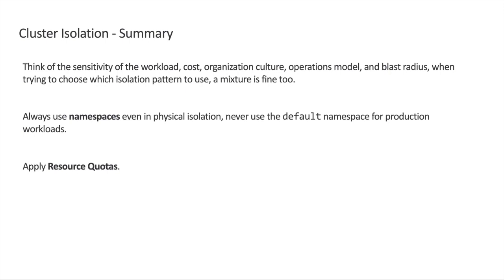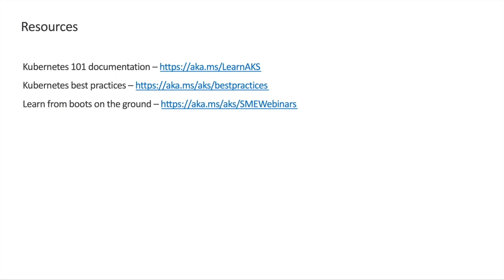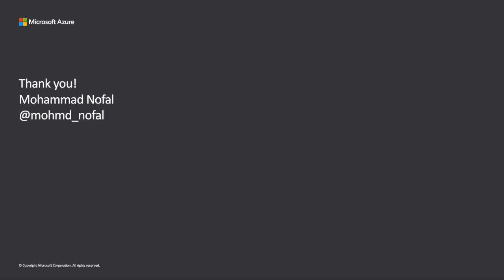Never use the default namespace for anything close to production. And resource quotas must be applied even in physical isolation. On resources: if you are at the beginning of your Kubernetes journey, check our conceptual or 101 docs. If you are looking for recommendations and best practices, we have great docs based on our collective experience helping customers use Kubernetes in Azure. This session and more related sessions can be found in the sessions link. I hope you have enjoyed it — thanks for watching.